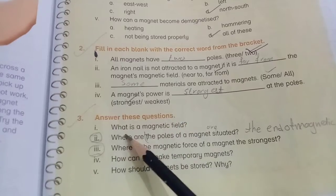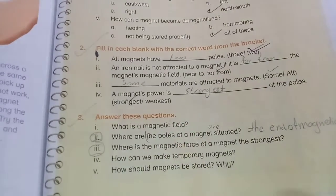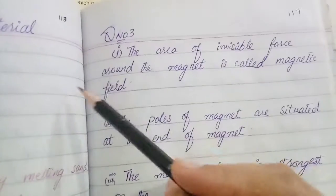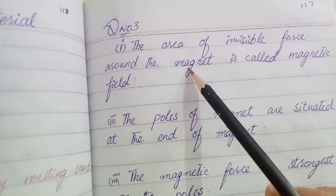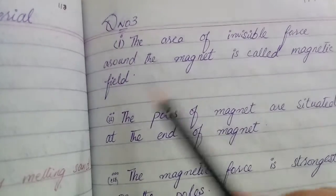Answer these questions: What is a magnetic field? The area of invisible force around the magnet is called magnetic field.